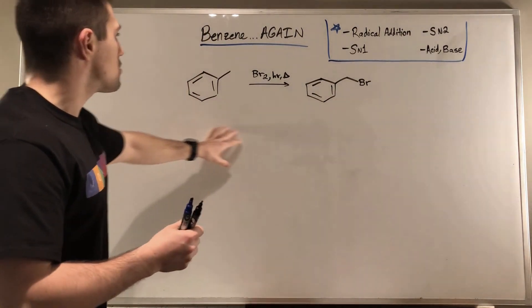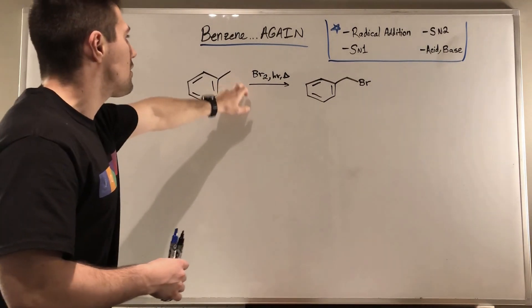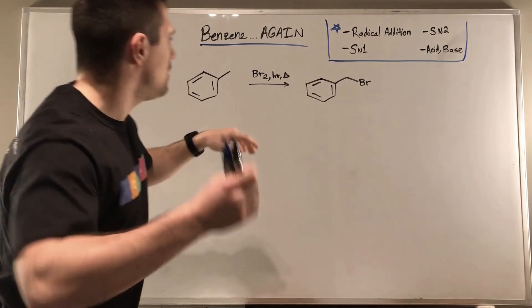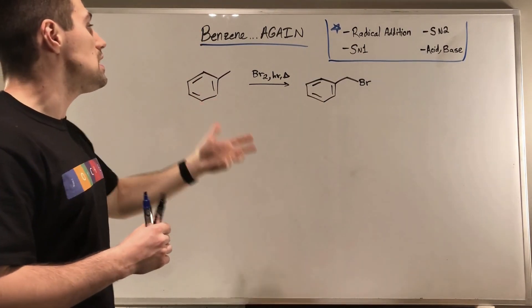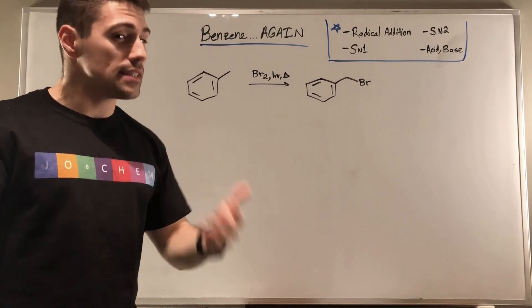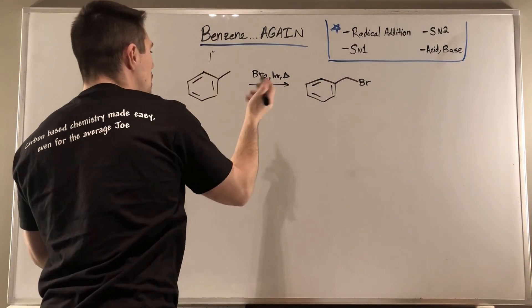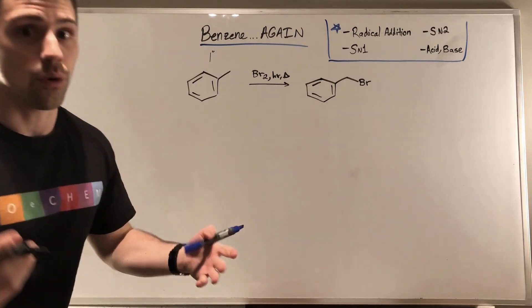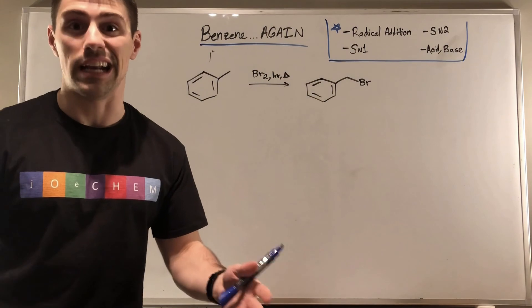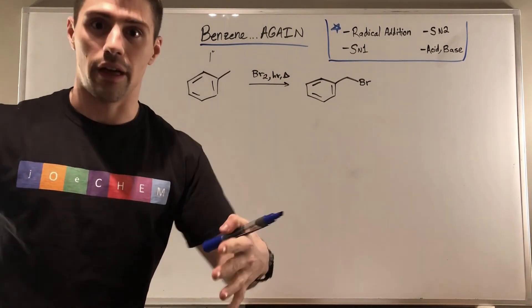So if we look at this reaction right here where we have methylbenzene, a.k.a. toluene, and we give it conditions for radical bromination, Br2, shine a little light, toss in a bit of heat, then we see we get this product. And what you would see if you ran this in real life is that it's going to readily form, which seems weird because this is a primary carbon. If you think about the stability of a primary radical, it's not very good. The ability for that primary radical to hyperconjugate is not great.